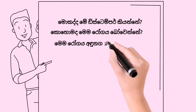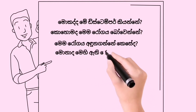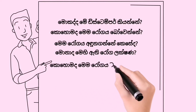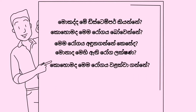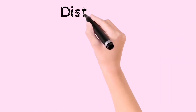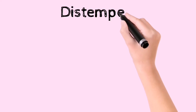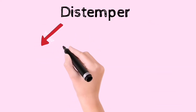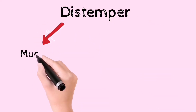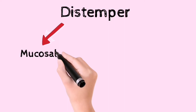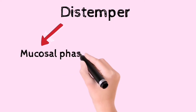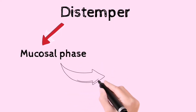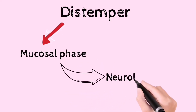This is what we need to do. This is what we need to do with our distemps. We need to get a little bit more than this. This is what we need to do with our mucosal face. This is what we need to do with our neurological face.